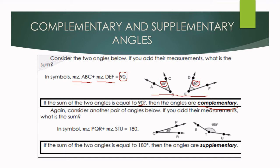What about these two angles? We have angle PQR which measures 30 degrees, and angle STU which measures 150 degrees. If you add their measurements, the sum is 180 degrees — that is 30 degrees plus 150 degrees equals 180 degrees. Therefore, these two angles are supplementary angles.